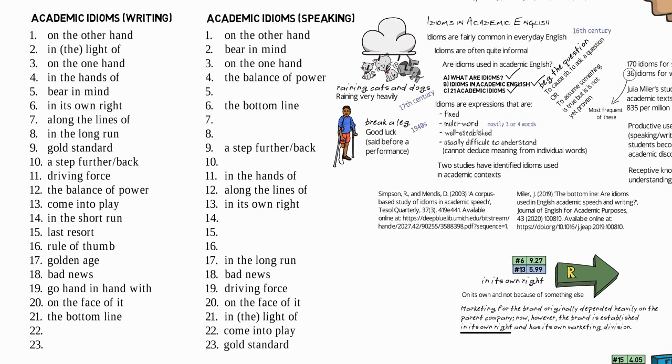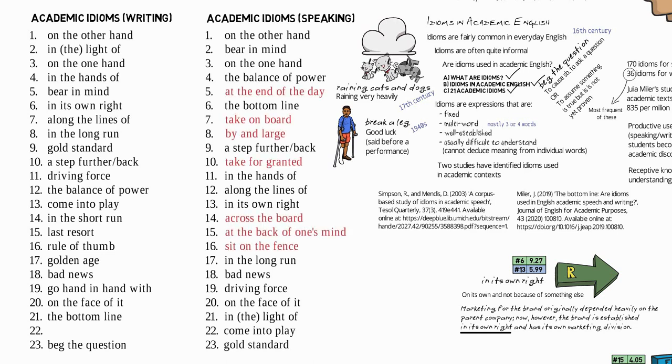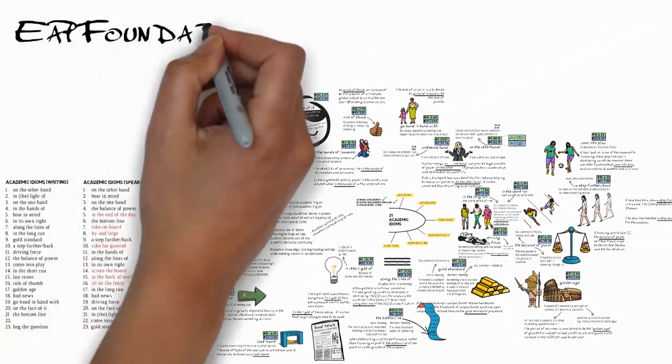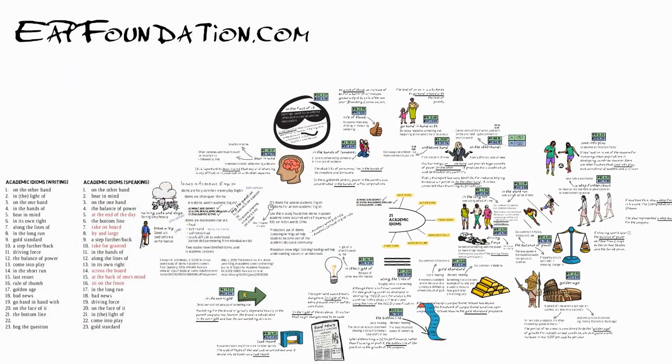And we've actually also seen number 22 and 23 on the list for speaking. We also had a bonus idiom, beg the question, which is number 23 in the list for writing. In case you're interested, these are the academic idioms for speaking that we didn't see: at the end of the day, take on board, by and large, take for granted, across the board, at the back of one's mind, and sit on the fence. If you'd like to see these idioms in another video, let me know in the comments below.